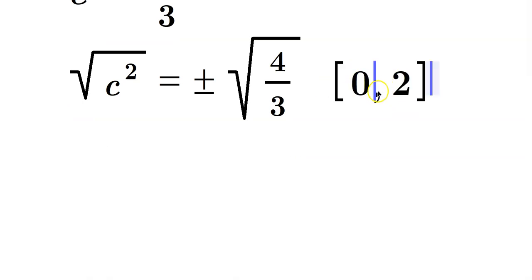0 is OK. 2 is OK. And then you need a positive number between them. So that negative here has to be discarded. We cannot use the negative for that reason. In other words, c has to be equal to just the positive root of 4 over 3, like this.